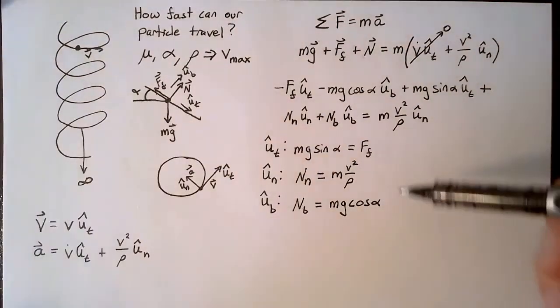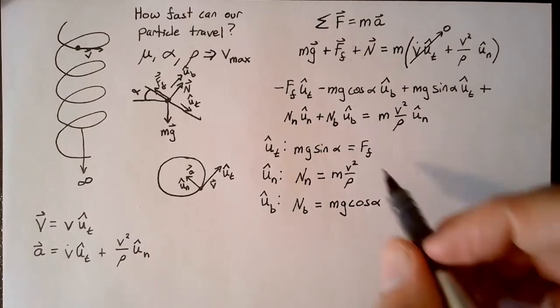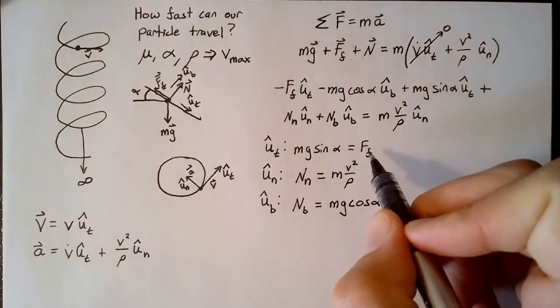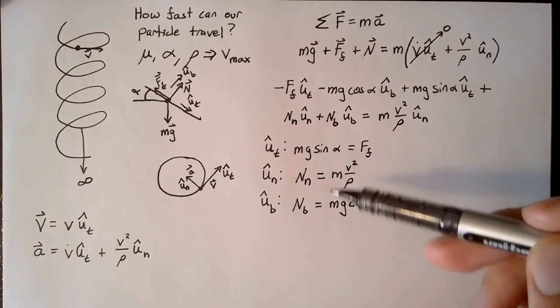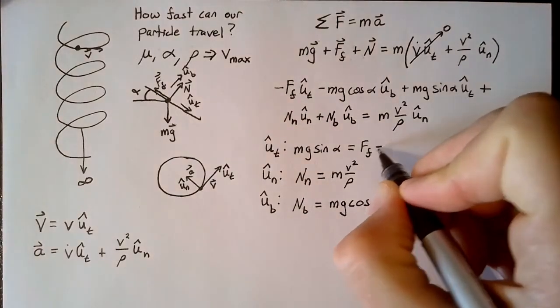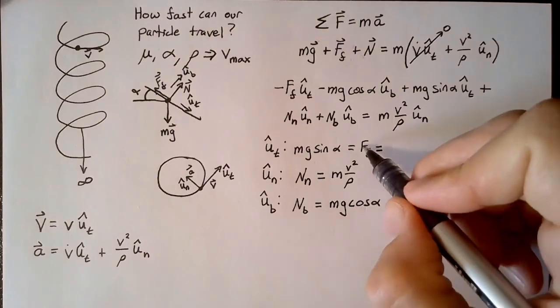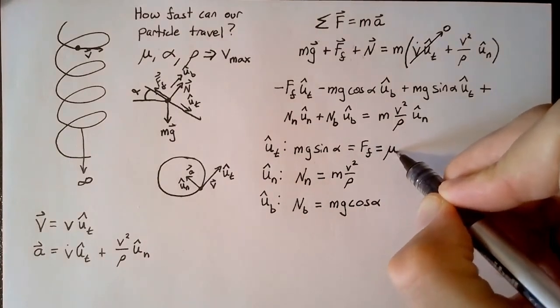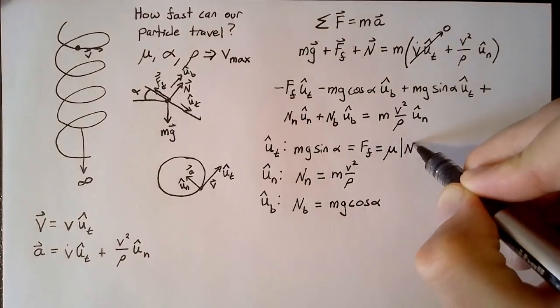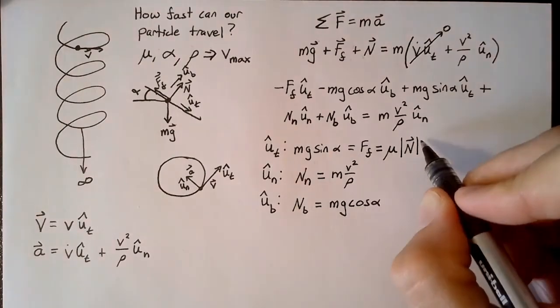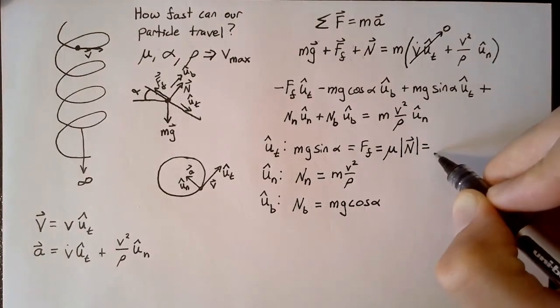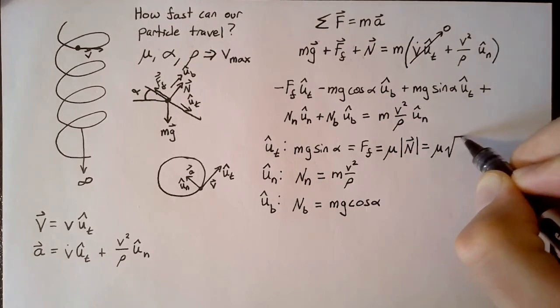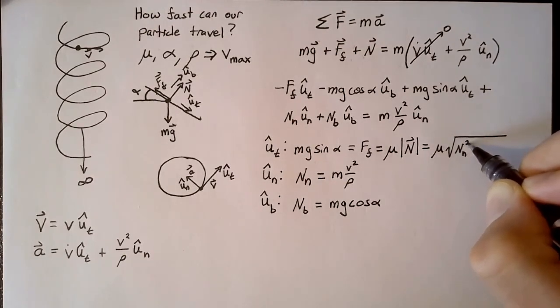The final equation that will tie all these together is the fact that our friction force is proportional to the magnitude of our normal force. So let's say that in math. The force of friction is equal to mu times the magnitude of n. And we can write this magnitude using Pythagoras. So that will be mu times the square root of the two components squared.